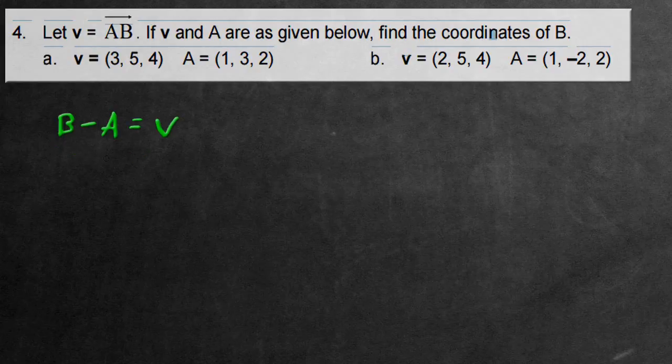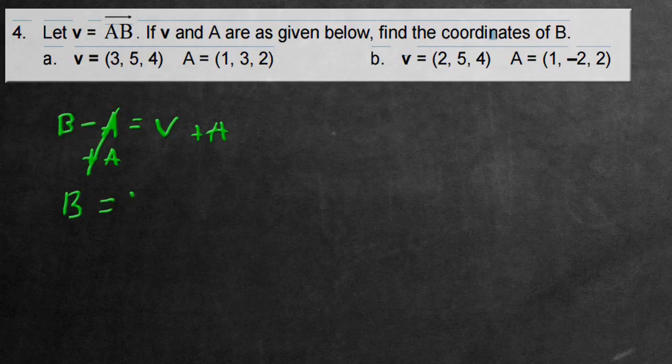The coordinates we're trying to find is that of vector B, so we just use some simple algebra and manipulate the way we found the actual directed line segment. We're going to be adding A to both sides and that'll cancel all of the A's. So we'll have B, the one we're trying to find, equal to the coordinates of vector V add the coordinates of vector A.